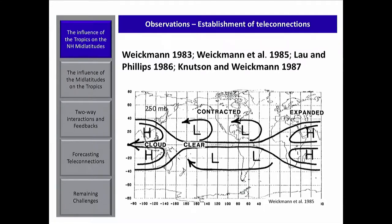Based on a relatively short record, these pioneering works showed that the mid-latitude circulation can be affected by tropical convection during periods when convective activity is moving from the Indian Ocean into the Western Pacific. They demonstrated that when convection is located in this region, the associated circulation consists of a pair of downwind cyclones located near the region with suppressed convection. These cyclones extend over the whole Pacific region and their meridional structure allows them to extend into the mid-latitudes on both hemispheres near 35-40 degrees north.